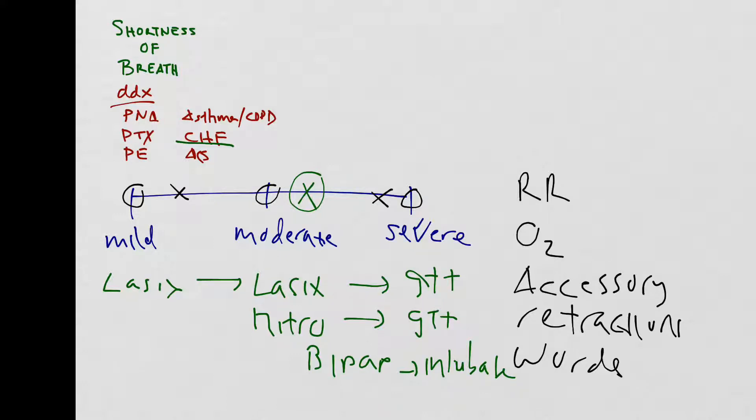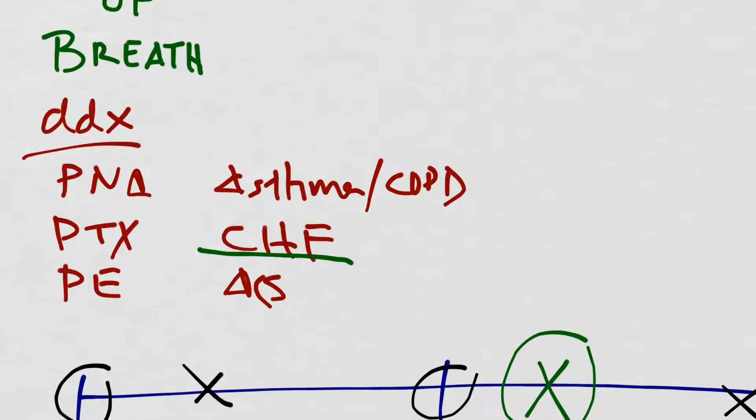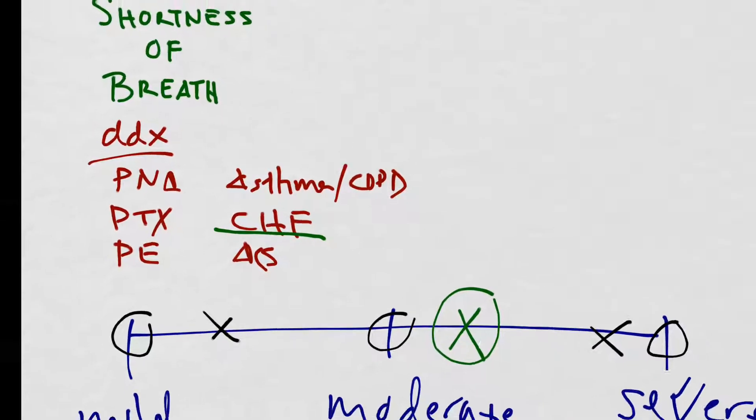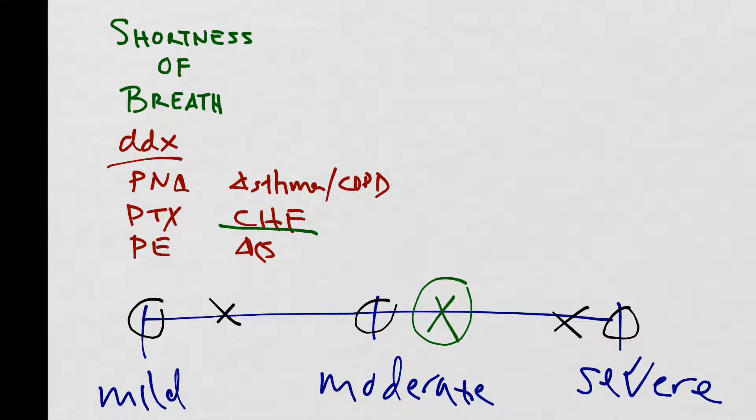Now, while you're treating your patient and beginning to resuscitate them, you'll want to start ordering some labs and some imaging and treatments for your patient. In order to do that, we need to, again, reassess our differential diagnosis to figure out what are the appropriate tests that we should be ordering.